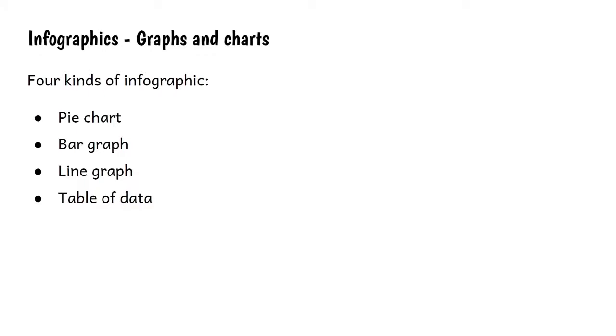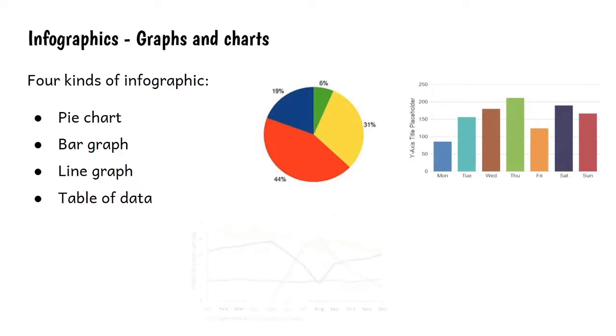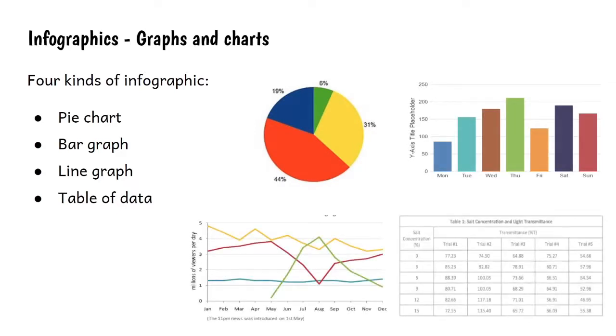We have to think about the pie chart, the bar graph, the line graph, and finally the table of data. Each of these styles of infographic have different advantages and disadvantages, and we use them in different places. It's not always the case that each infographic is suitable for the job in hand. We have to carefully choose one based on the graphic's strong points, so let's take a look at them individually.